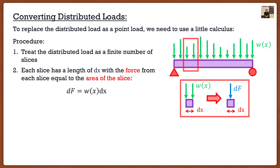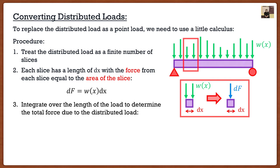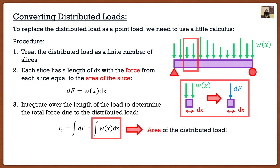To consider the whole beam, we integrate over the entire length. So the complete resultant load FR is simply the integral of W(x) dx over the length of the beam. You may recognize that this is simply the area of the distributed load. To find the magnitude of the equivalent point load, it's simply the area of the distributed load. That's the first question answered.